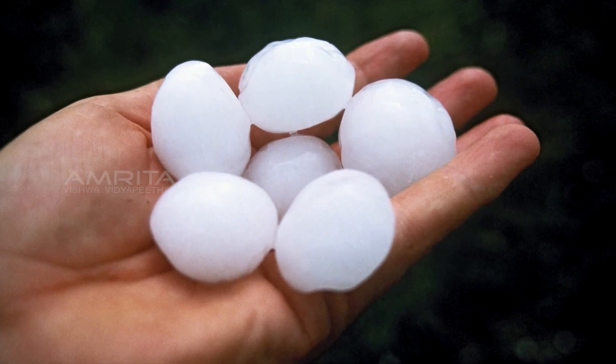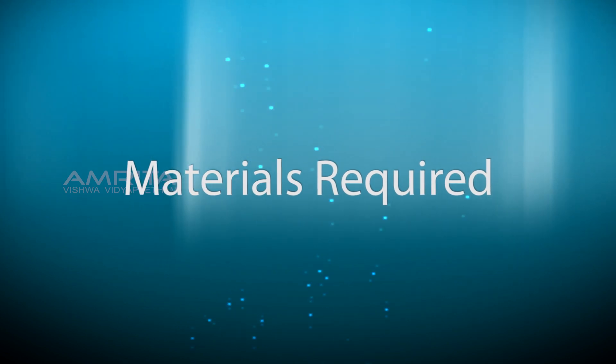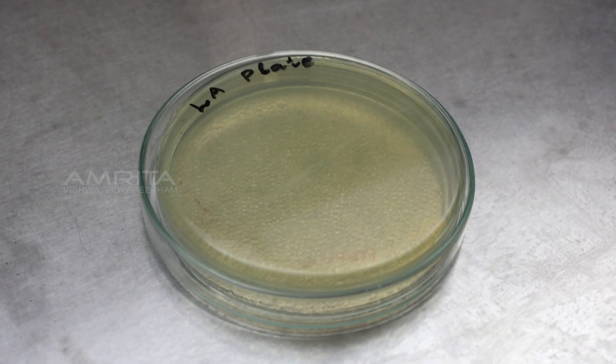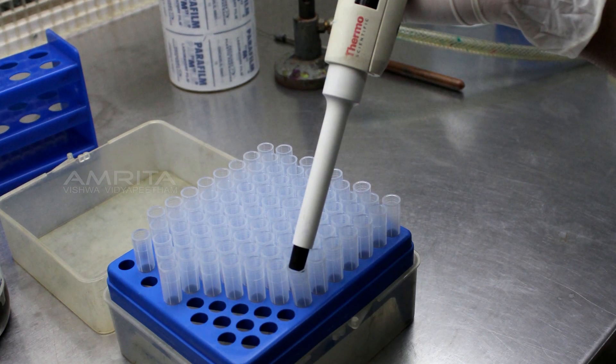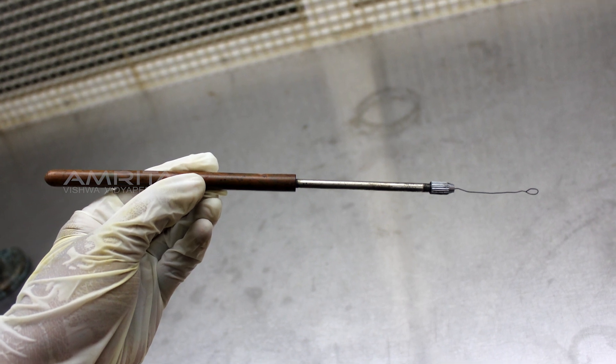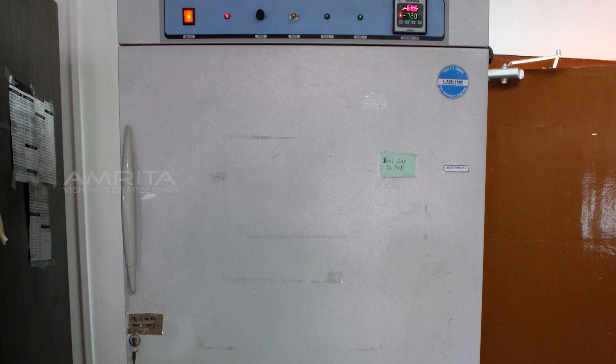Materials required: LB broth, LB agar plates, micropipette and tips, Bunsen burner, inoculation loop, 80% glycerol, and minus 80 degree Celsius freezer.